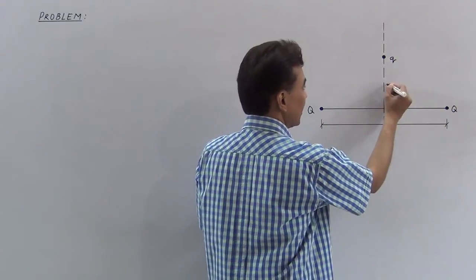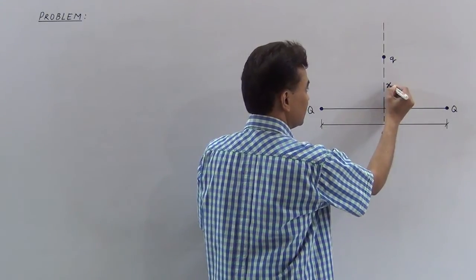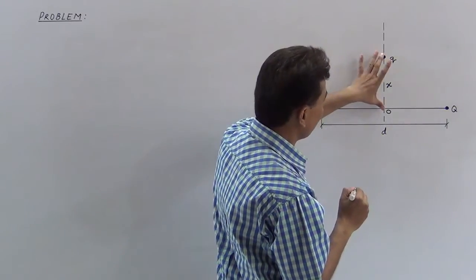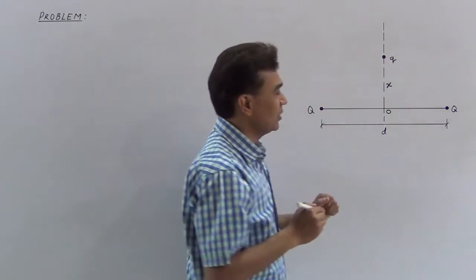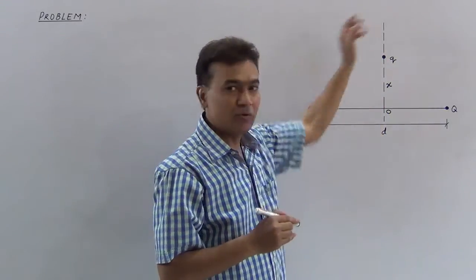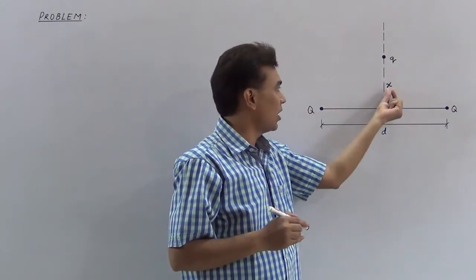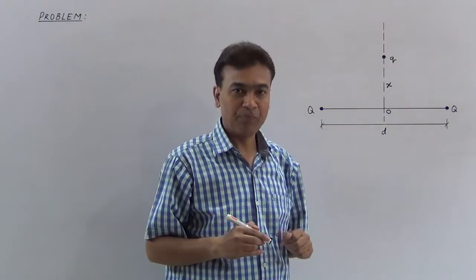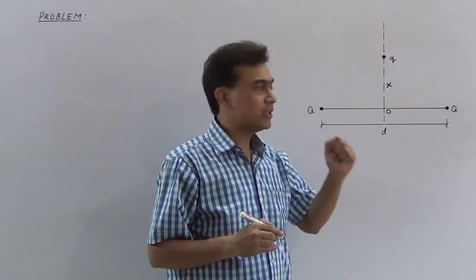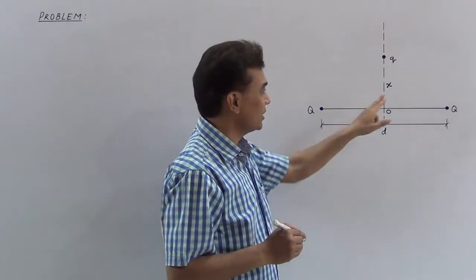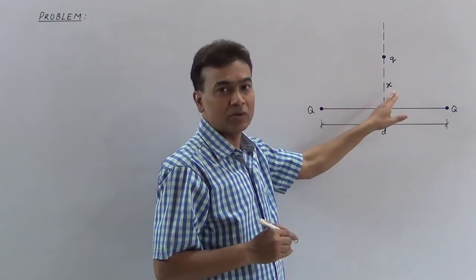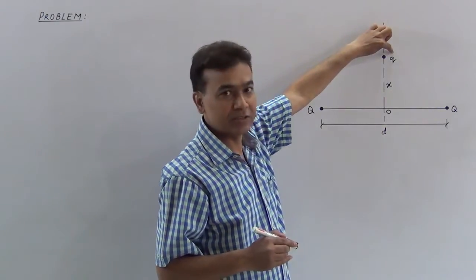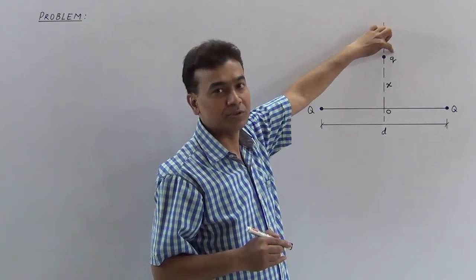I choose x as the distance along the perpendicular bisector from the origin point. I place the charge at position x on the perpendicular bisector. I need to calculate the value of x such that the charge experiences maximum force.